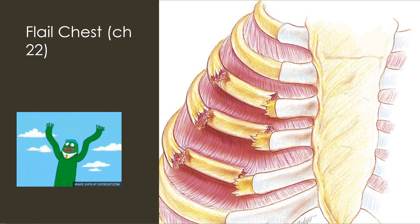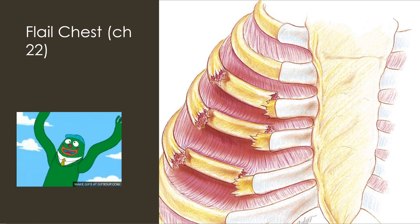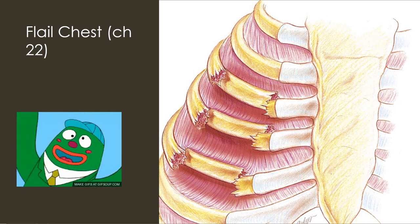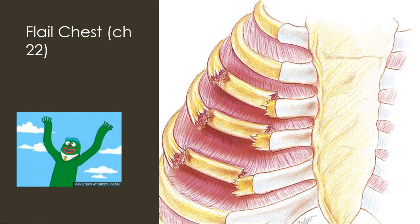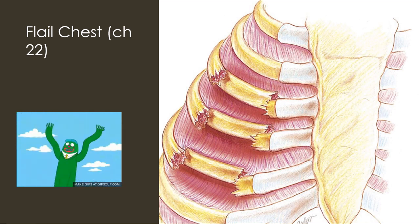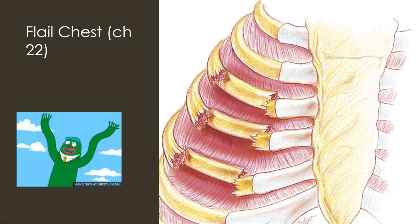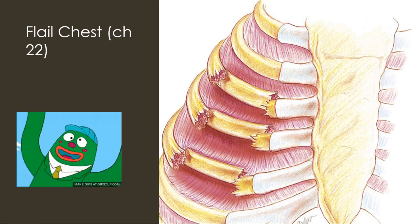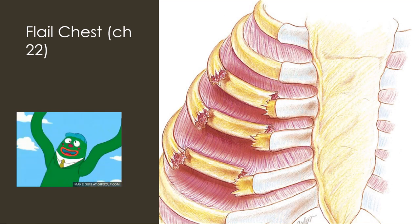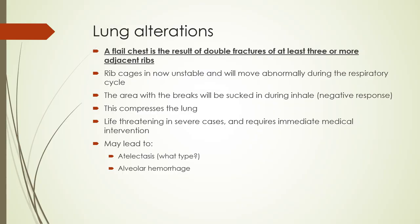Flail chest by definition is a double break in three consecutive ribs — that's the main point to take away. Sometimes you may be able to see this at the bedside, and I have little animations to show what it looks like on patient assessment. Sometimes you may not be able to pick it out because they might be breathing very shallow and not generating enough pleural pressure to see that caving in. You might just notice it on a chest x-ray or CT scan.